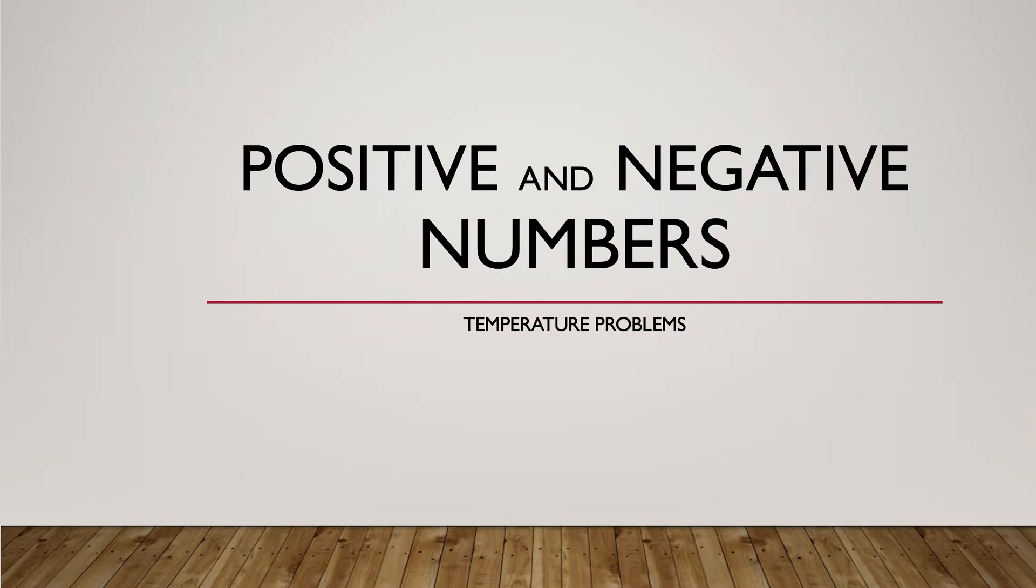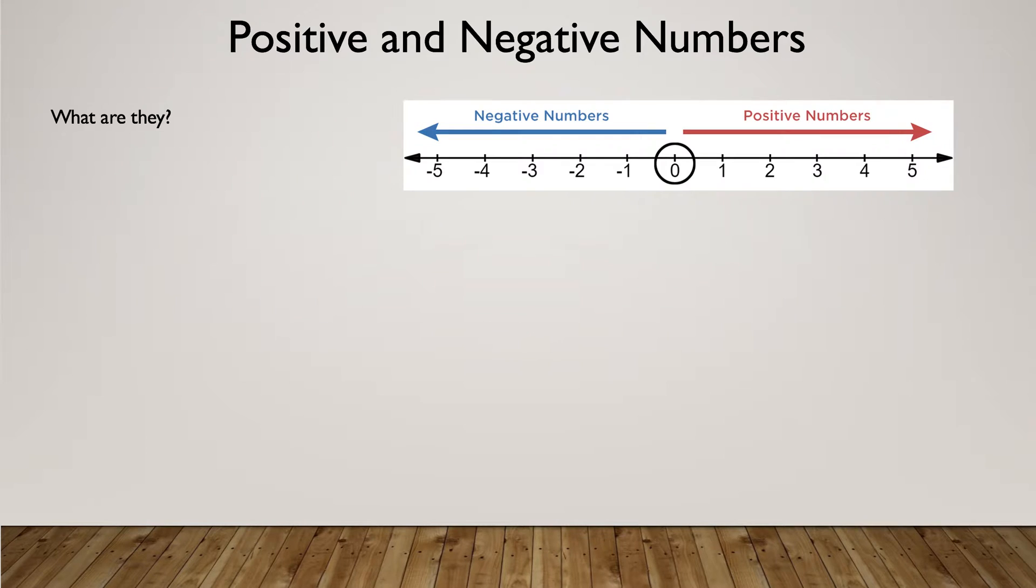We are going to be talking about positive and negative numbers, temperature problems. So what are positive and negative numbers? Positive numbers are greater than zero. Negative numbers are less than zero.